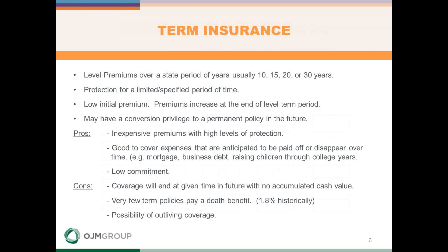With term insurance, you select a death benefit amount you want to be covered for, and you can have level premiums for a period of time — typically 10, 15, 20, or even 30 years. At the end of that term, premiums typically increase substantially, and most people cancel the coverage. A common application is covering the purchase of a home or while children are younger; as financial obligations diminish, the need for the lump sum death benefit is no longer there.